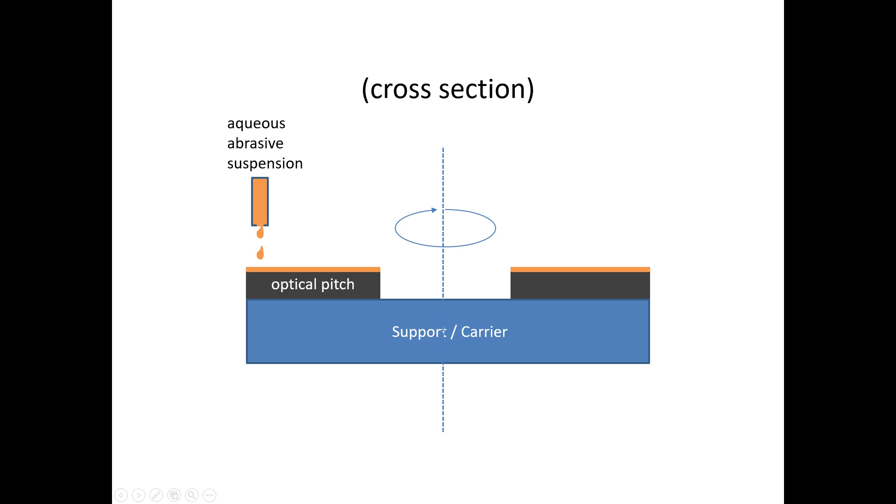The flat surface in the machine itself consists of a circular ring of optical pitch, which is on top of a very stiff, rotating carrier plate or ring. The abrasive component is often an aqueous suspension of cerium oxide or aluminum oxide. And the choice for a specific abrasive is dependent on the type of material that you would like to polish.